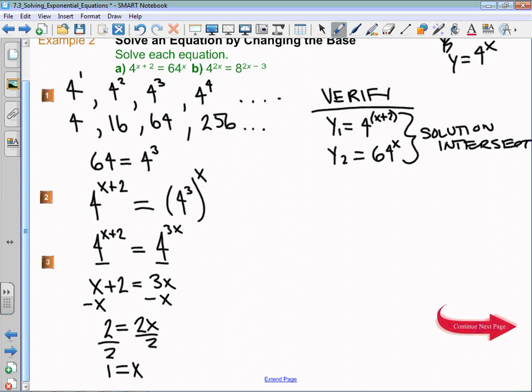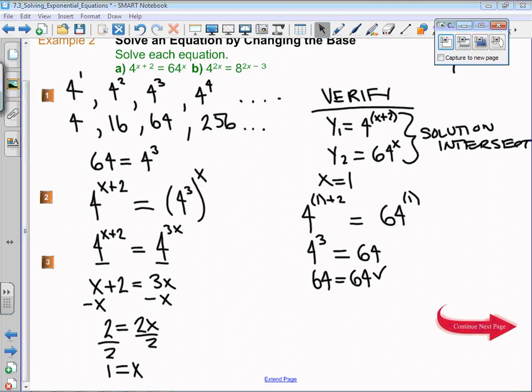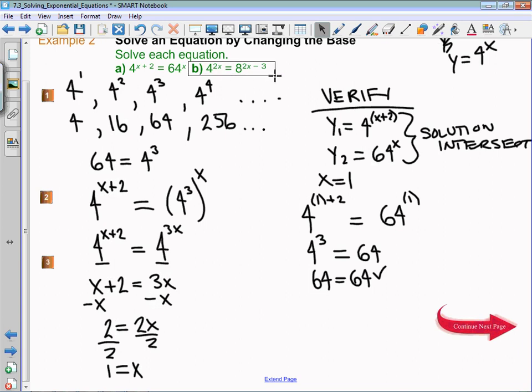The other way of verifying, which is a little bit easier, is to plug your answer x equals 1 into both sides of the original equation. Is 4 to the power of 1 plus 2 equal to 64 to the power of 1? This is 4 to the power of 3 equals 64, and that indeed gives me 64 equals 64. So we know that's verified and we've solved it correctly. Please do exploit that ability. It's very useful and allows us to check that we've done things correctly.